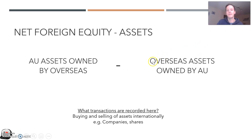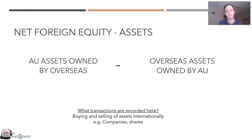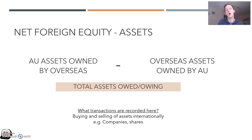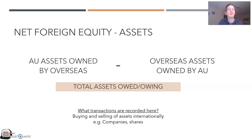Conversely, if you bought shares in Apple — an American company — that would be an overseas asset owned by Australians. Net foreign equity is calculated by adding up all Australian assets owned by overseas people and companies, then subtracting all the overseas assets that Australians own. When an overseas investor buys an Australian asset, we have an obligation to them in the future — we kind of owe them returns in the form of dividends or profits.